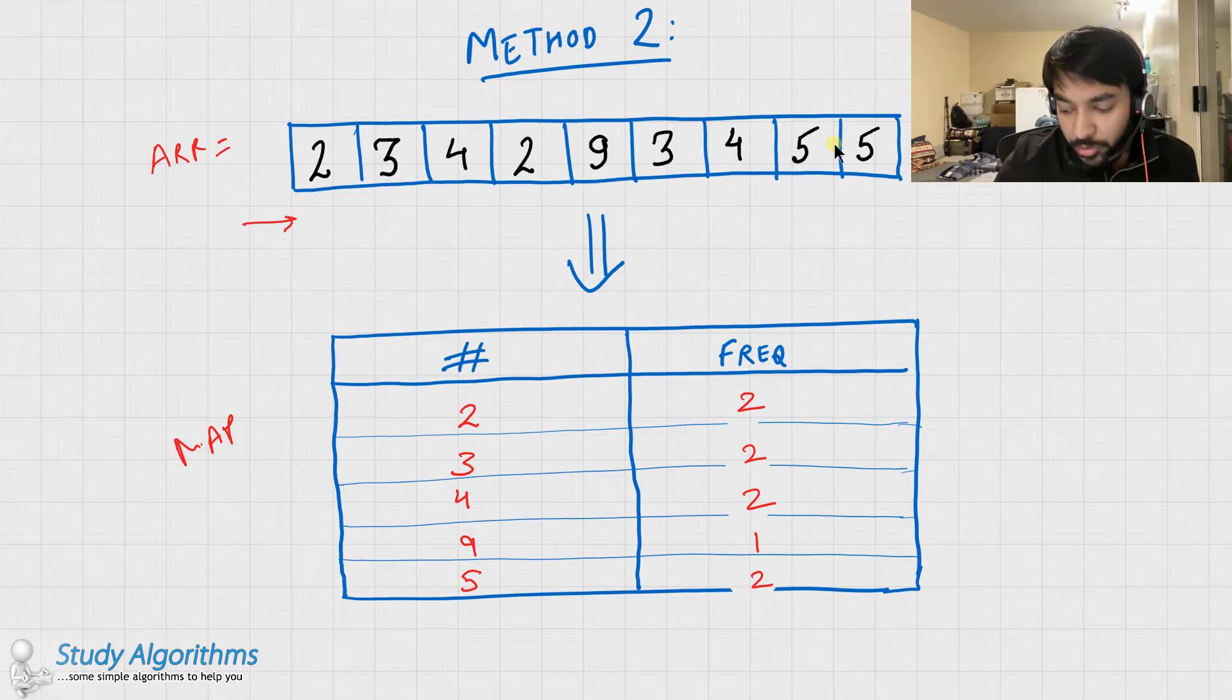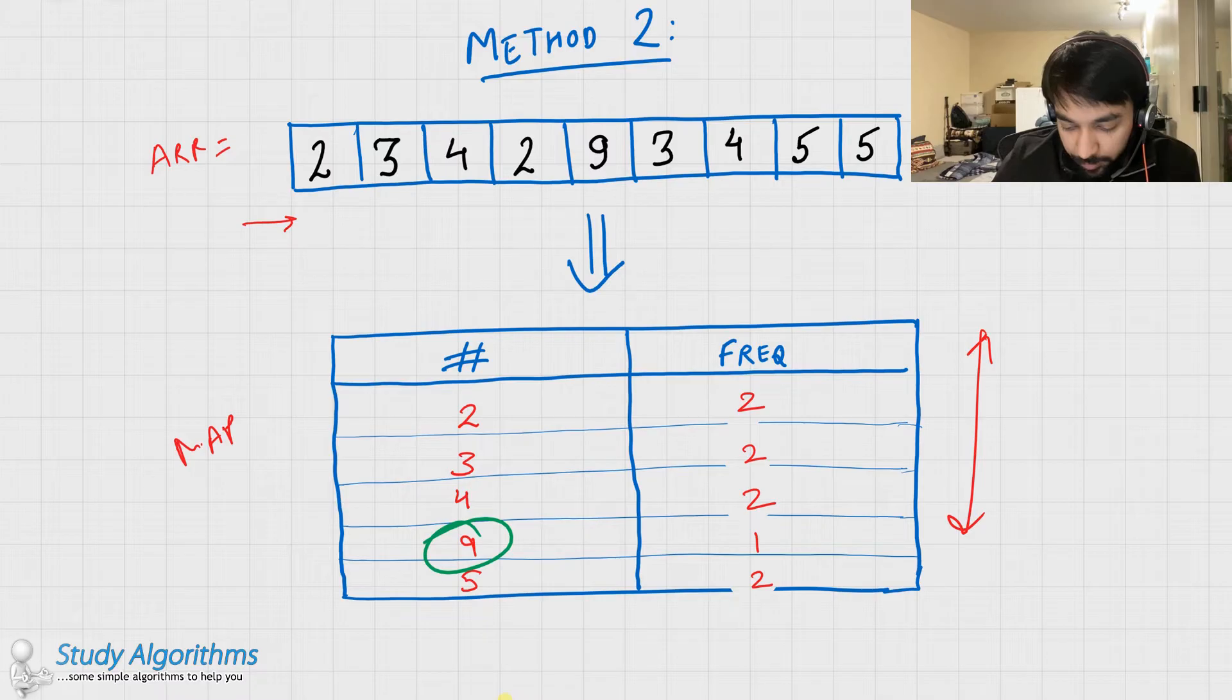Once you are done with this, just scan through this entire hash map, and see which number has the frequency of 1. So as you can see, the number 9 has a frequency of 1. And hence, this would be your answer.